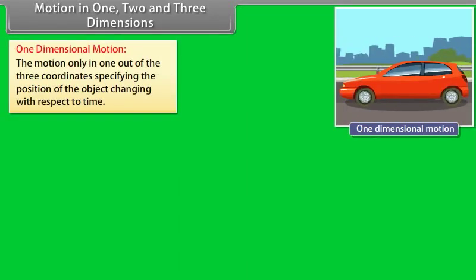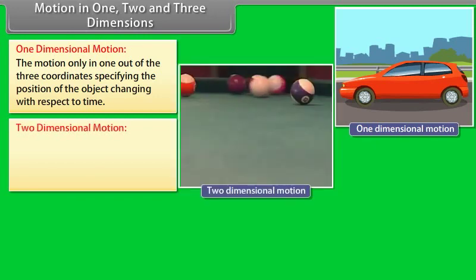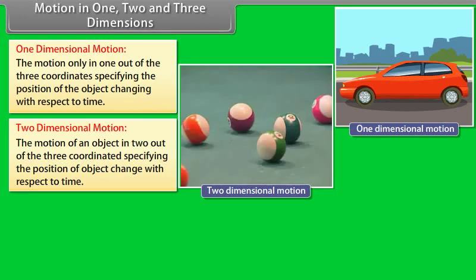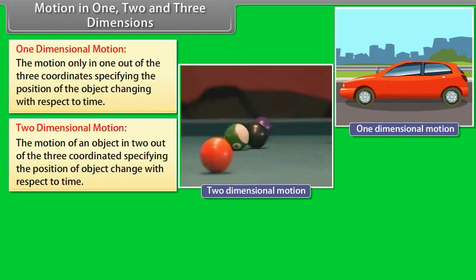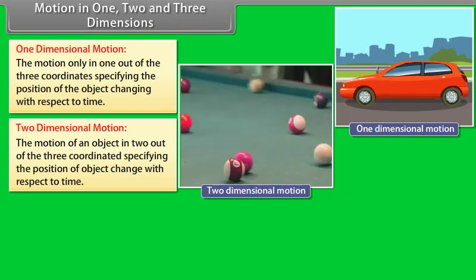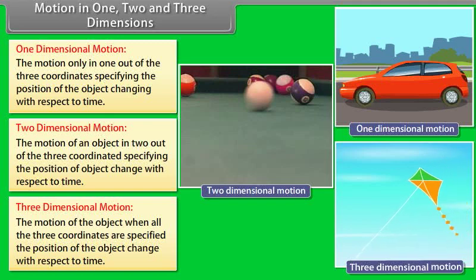Motion in one, two, and three dimensions. One-dimensional motion: motion in only one out of three coordinates specifying the position of the object changes with respect to time. Example: a car traveling in a straight line. Two-dimensional motion: the motion of an object where two out of three coordinates specifying the position change with respect to time. Example: a billiard ball moving over a billiard table. Three-dimensional motion: the motion of an object where all three coordinates specifying its position change with respect to time. Example: a kite flying on a windy day.